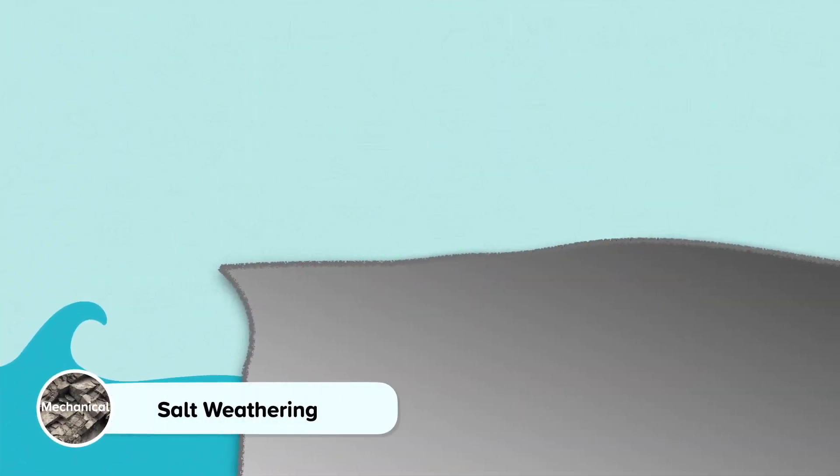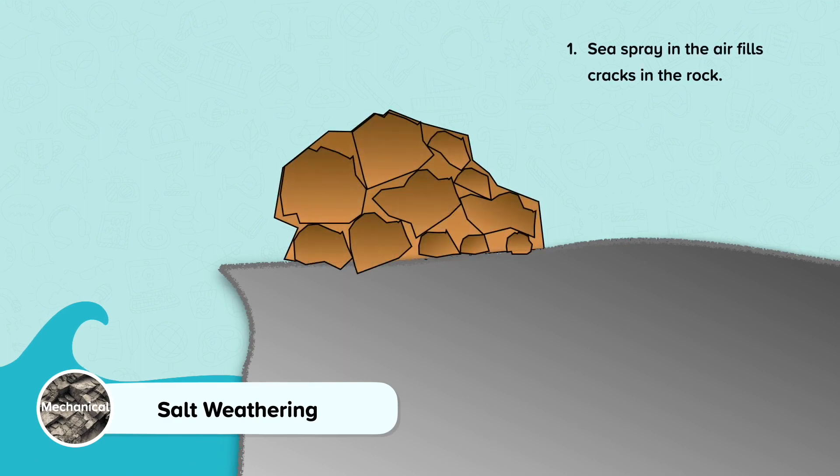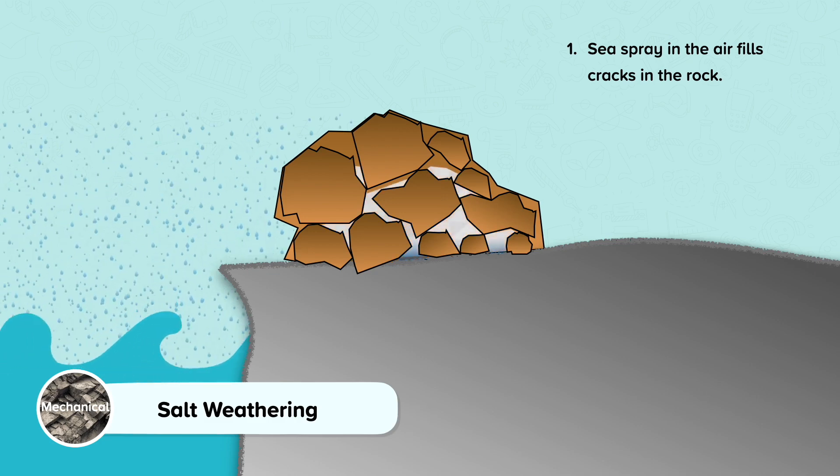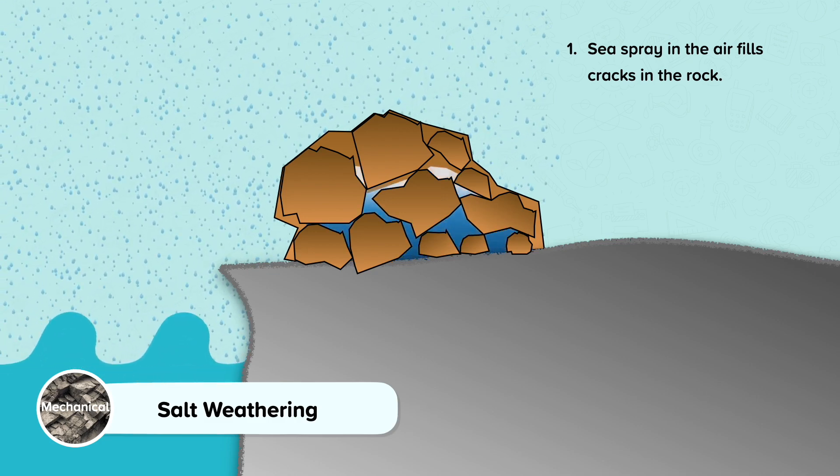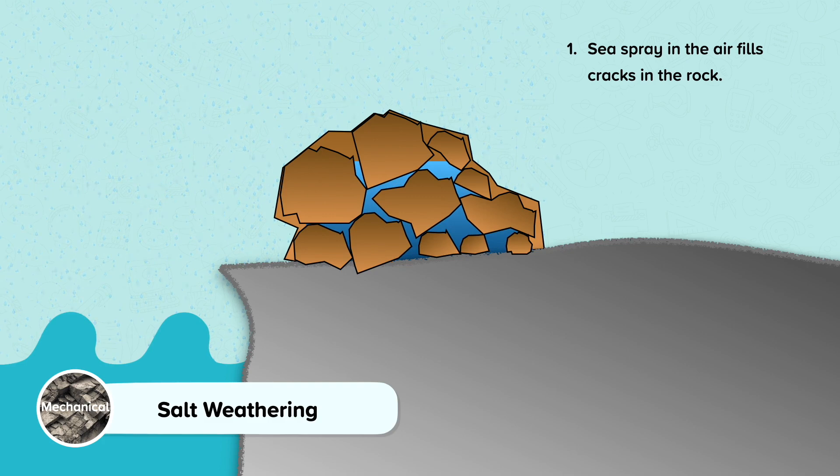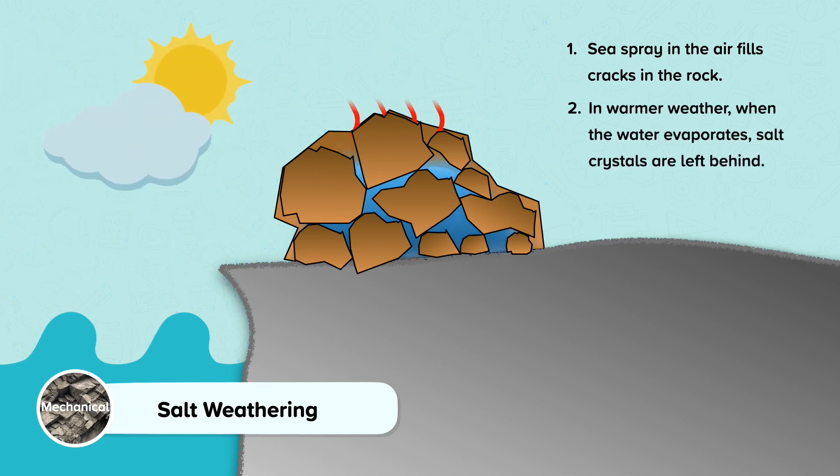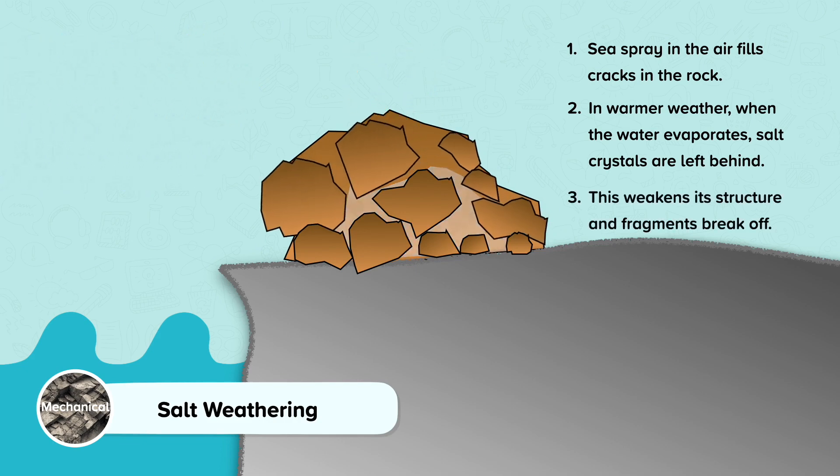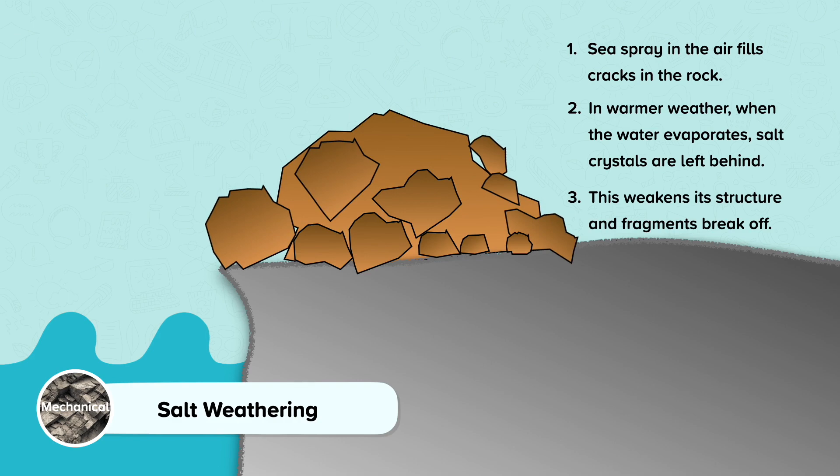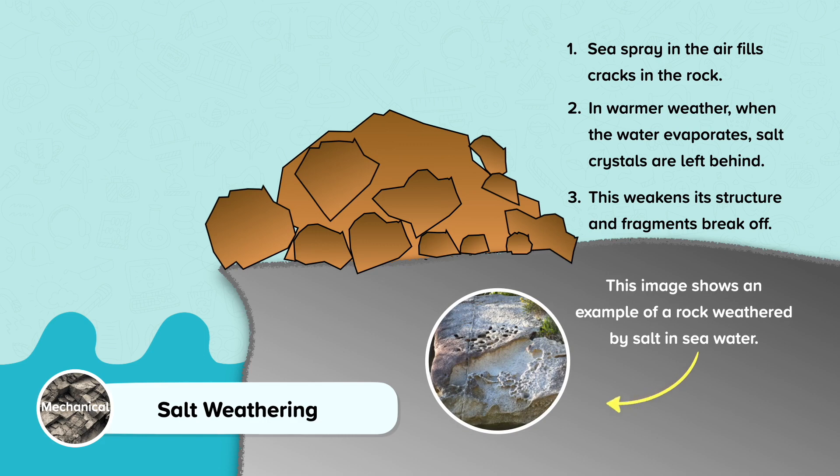Salt weathering is another type of mechanical weathering. Let's look at the step by step process of salt weathering. Sea spray in the air fills cracks in the rock. In warmer weather, when the water evaporates, salt crystals are left behind. This weakens its structure and fragments break off. This image shows an example of a rock weathered by salt in seawater.